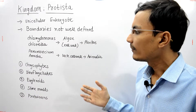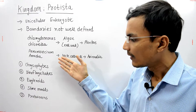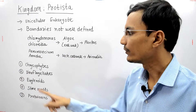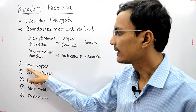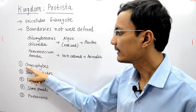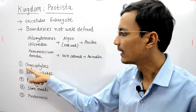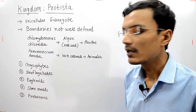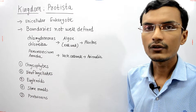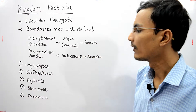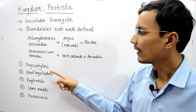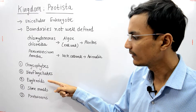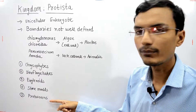This kingdom includes five different groups. You can remember them by the first letters of each name: C-D-E-S-P. These five groups included in Kingdom Protista are: Chrysophytes, Dinoflagellates, Euglenoids, Slime molds, and Protozoans.